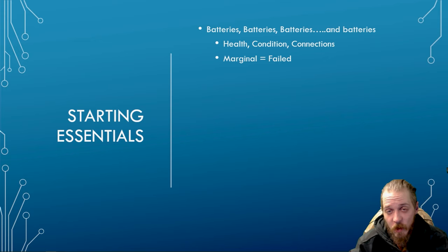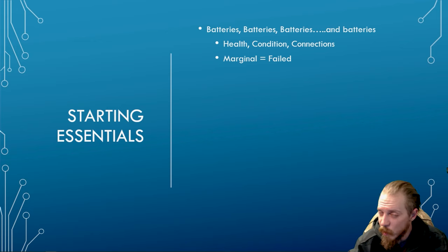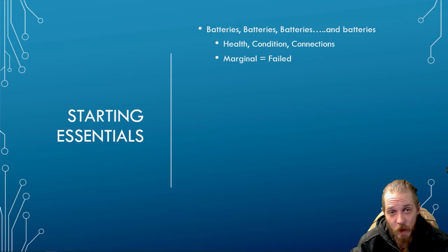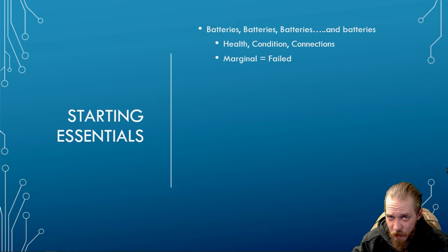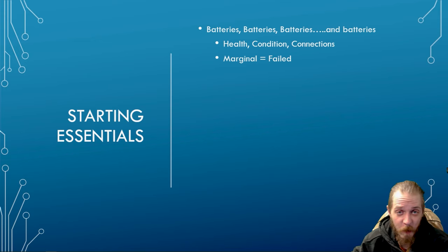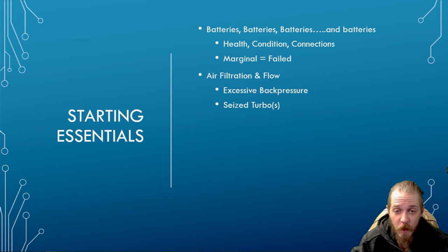If the batteries are marginal — say 60 to 70 percent state of charge — and it's a cold-weather crank no-start complaint, I'm looking at replacing those batteries if I can't bring them back with a solid charge. Next: air filtration and flow. Seized turbos are common, especially with VGT setups where the vanes can seize fully closed, building too much back pressure and creating a very hard start.